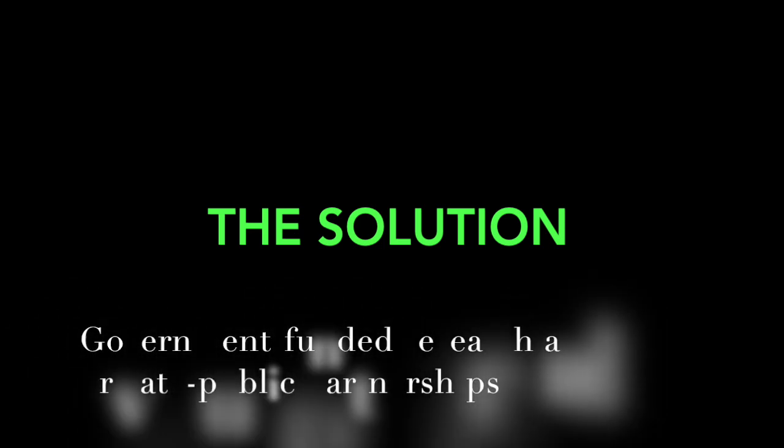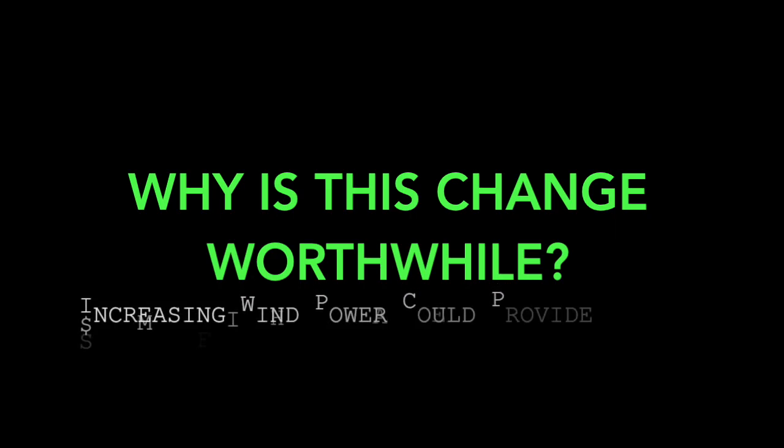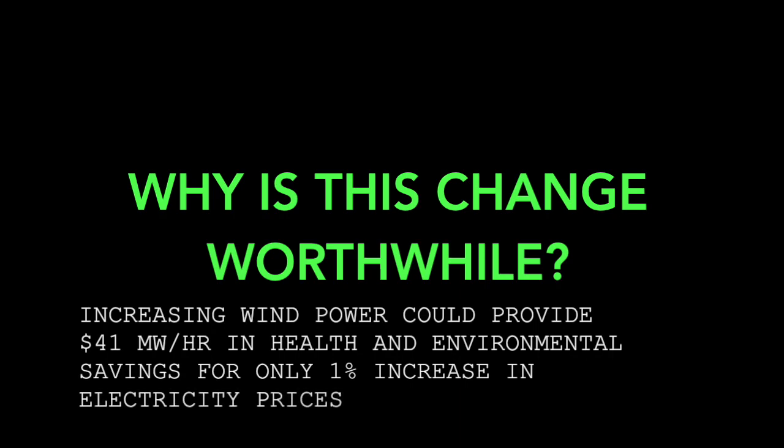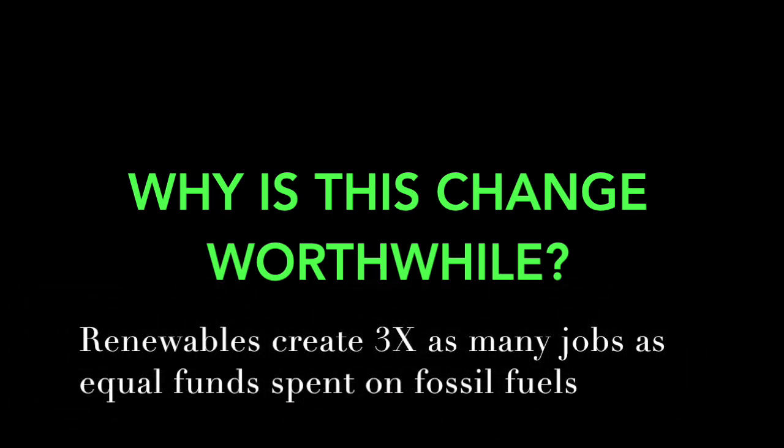The government must invest in renewable energy production and research using a carbon tax and cap-and-trade hybrid. The Department of Energy's Wind Vision Study from 2013 found that increasing wind power to 10 percent of U.S. electricity by 2020 and 20 percent by 2030 would result in 41 megawatt hours of avoided health and environmental benefits from reduced air pollution, for only a one percent increase in electricity prices in 2030. It would also result in 280 billion dollars in consumer savings from reduced natural gas prices. A study by the Wisconsin Energy Bureau estimated that renewables create three times as many jobs as an equal amount of funds spent on fossil fuels.